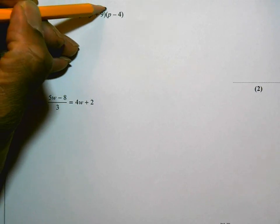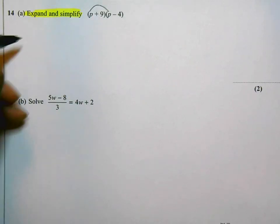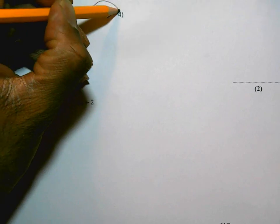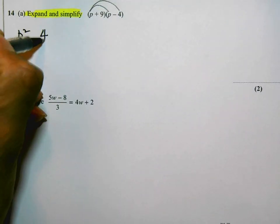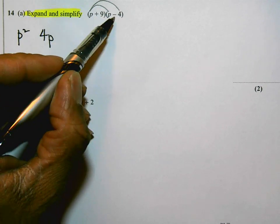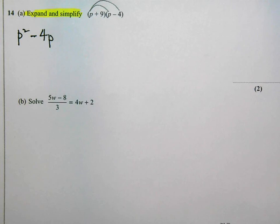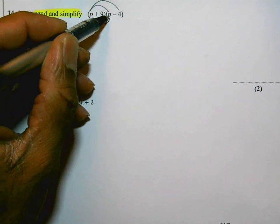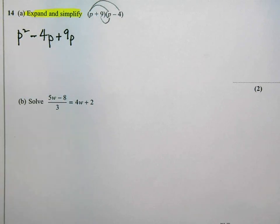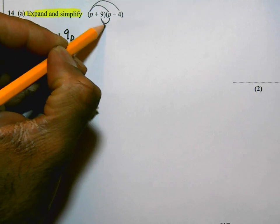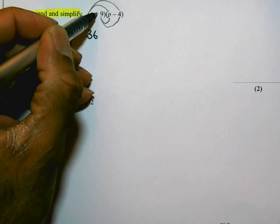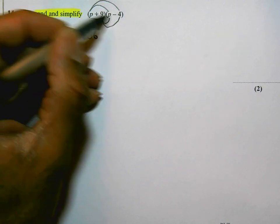So P times P is P squared. Then P times 4, but remember it's P times minus 4, so that's going to be minus 4P. Then I'm going to use the 9. 9 times P is 9P. That's positive 9, so positive 9 times P is plus 9P. And then 9 times 4 is 36, but positive 9 times negative 4, a plus times a minus is a minus.